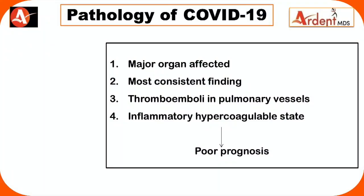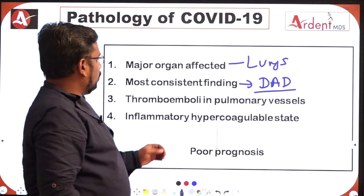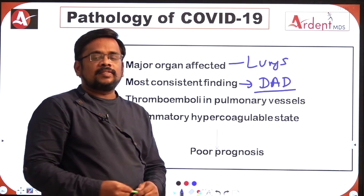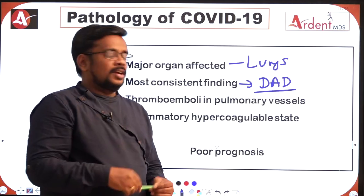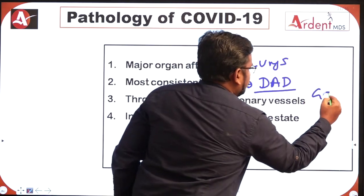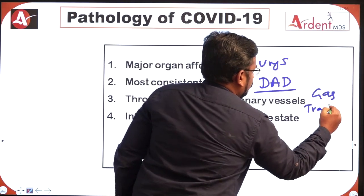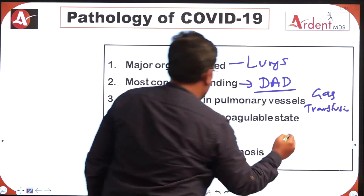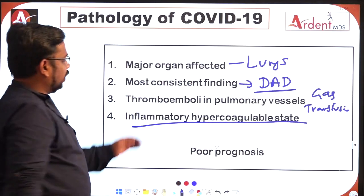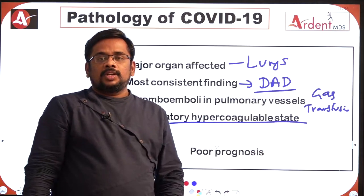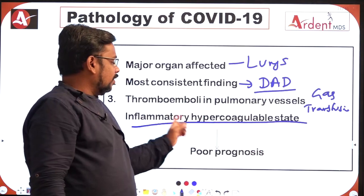Coming to the pathology of COVID-19: the major organ affected is the lungs. The most consistent finding is diffuse alveolar damage. There is also thromboembolism in pulmonary vessels, which decreases gas exchange. Additionally, there is presence of an inflammatory hypercoagulable state.